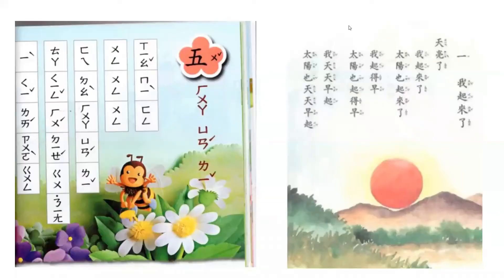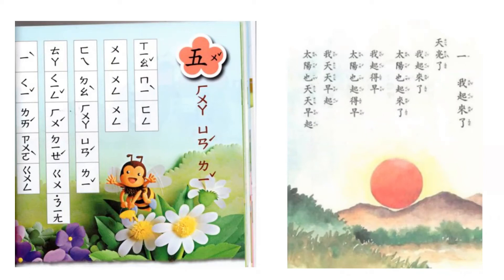Now we can see how Zhuyin is used in context. Here are two textbooks for elementary first-grade students — one used 30 years ago and one used recently. On the left side there's a Chinese character, and on the right side there is the Zhuyin. In the newer version of the textbook, they teach Zhuyin alone without the Chinese character. A Zhuyin character has a consonant on top, the middle vowel in the middle, the bottom vowel at the bottom, and an intonation mark. Combined together, they make one Zhuyin, and with these you can read the text.